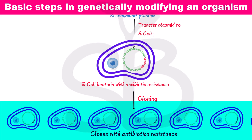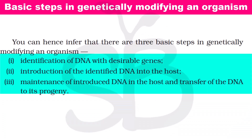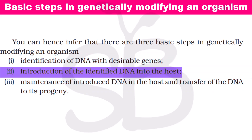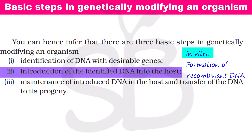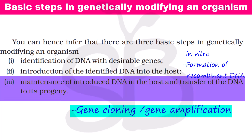The character of antibiotic resistance needs to be transferred — that is what gene cloning achieves. So, these three steps are important: identification of DNA with desirable genes; introduction of the identified DNA into the host; and maintenance of introduced DNA and transfer to progeny. The recombinant DNA step is in vitro, and the second step — gene cloning — is also called gene amplification.